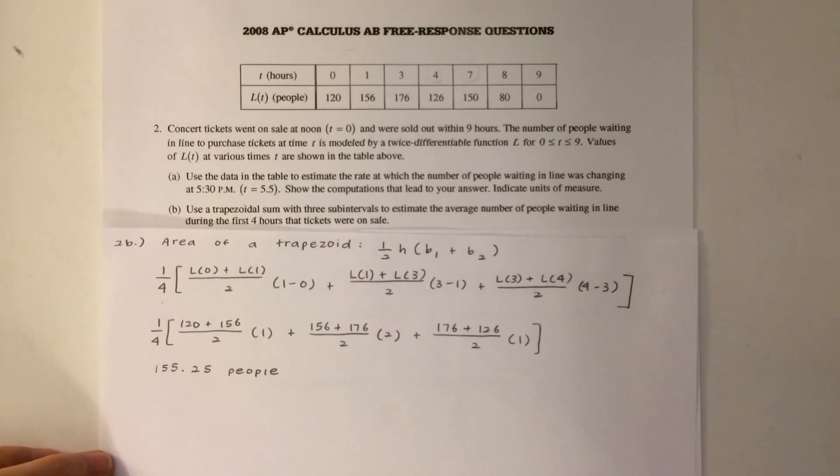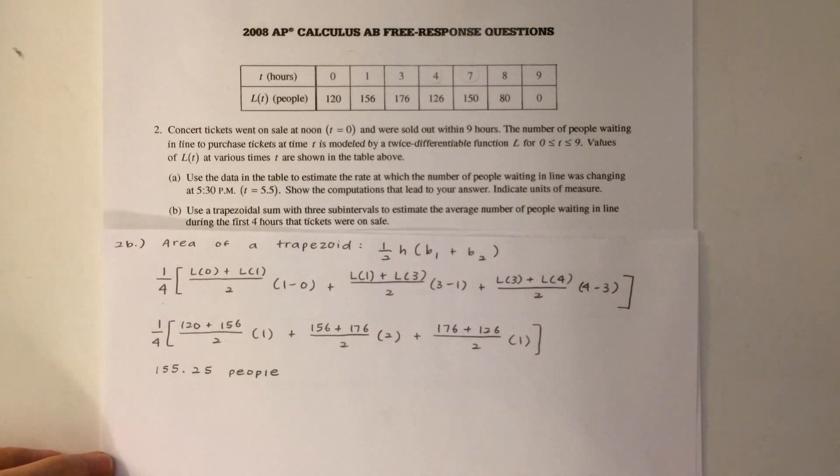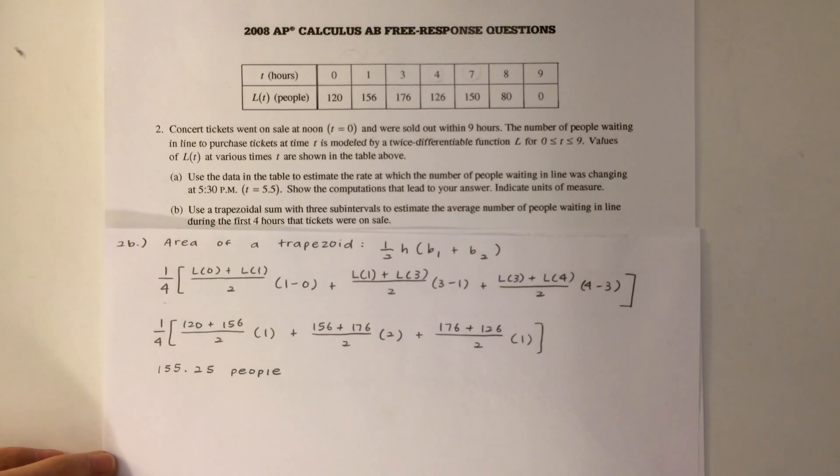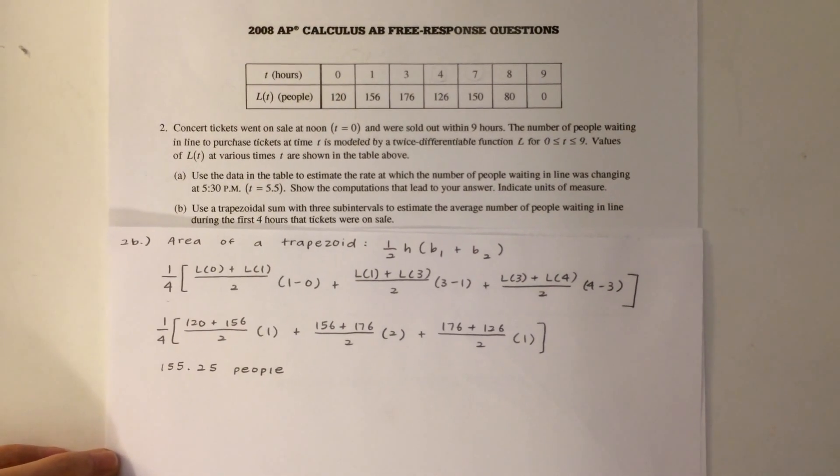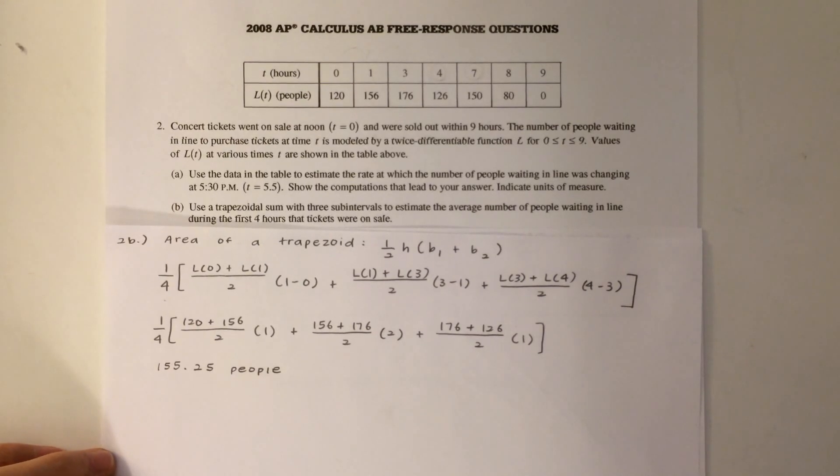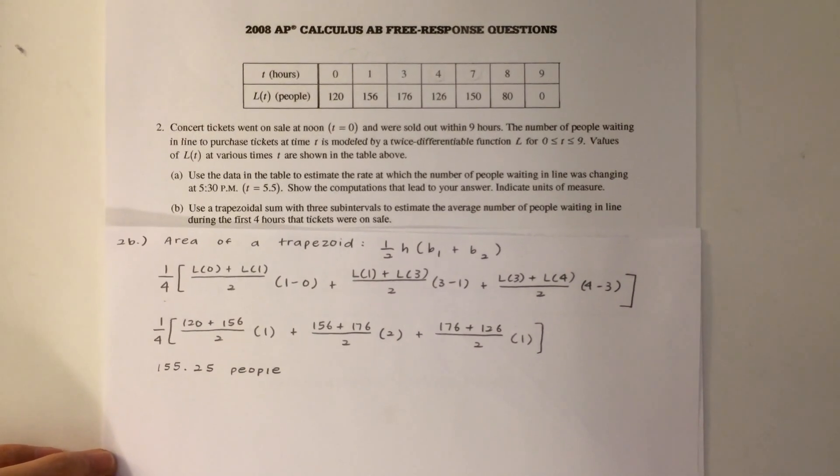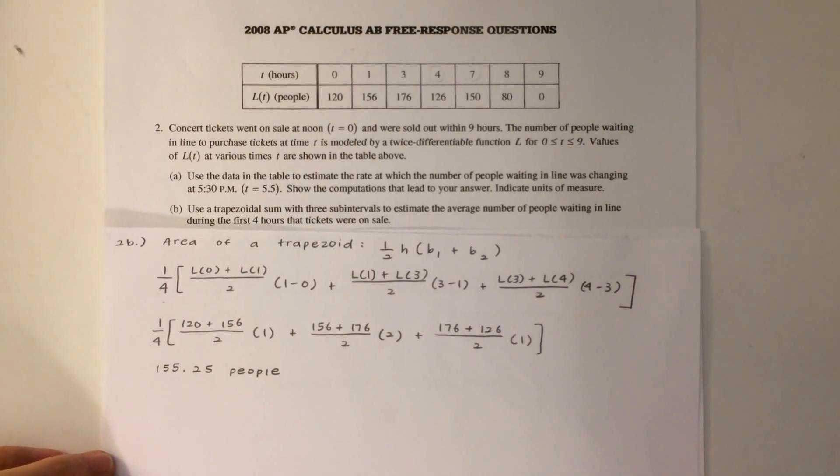The area of a trapezoid is one half times the height times the sum of base 1 and base 2. The height represents the difference in the time intervals, and the bases represent the number of people at the time intervals. For example,